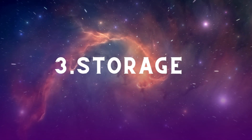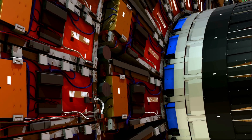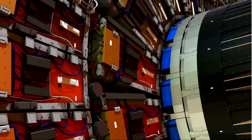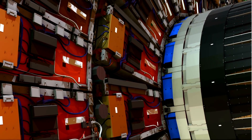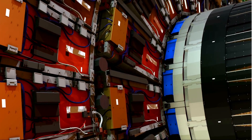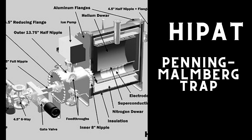Storage is another major challenge. Storing antimatter is difficult and expensive, requiring sophisticated equipment. If antimatter contacts ordinary matter, the result would be catastrophic, so it must be safely confined away from all matter. NASA developed a portable high-performance antiproton trap (HiPAT) designed to hold 10¹² antiprotons for up to 18 days using a Penning-Malmberg electromagnetic trap. However, we would need hundreds of such traps to hold just a few nanograms of antimatter.